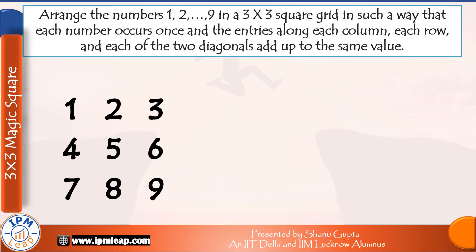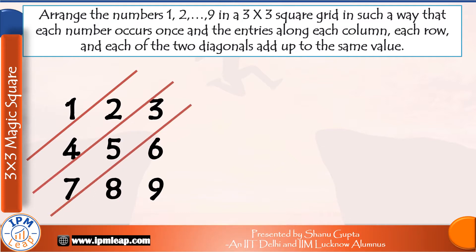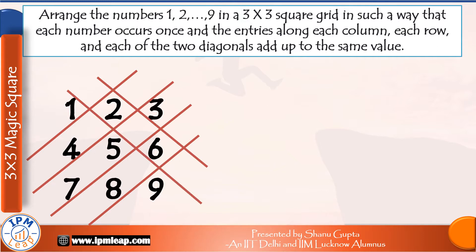Next, we have to draw lines diagonally to separate out these numbers. First line, second line parallel to the first, third line, and fourth line. Similarly, now draw lines in the opposite direction: first line, second line parallel to that, third line, and fourth line. All the numbers are now separated and we have a grid made by these two sets of parallel lines. In this grid, we can see that exactly 4 spaces are vacant or empty, and we can also see that exactly 4 out of these 9 numbers are lying outside this grid.